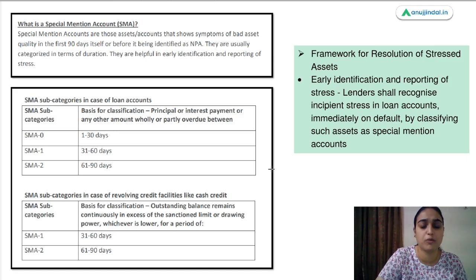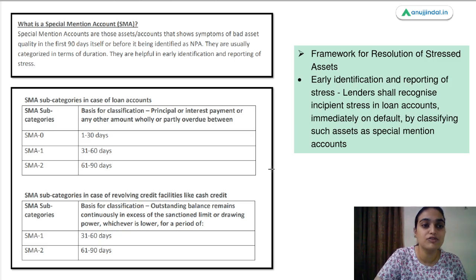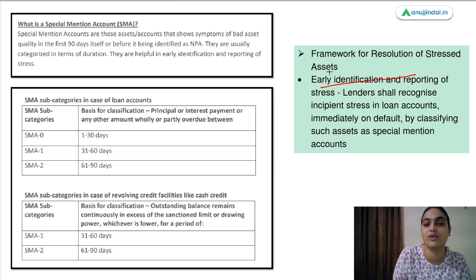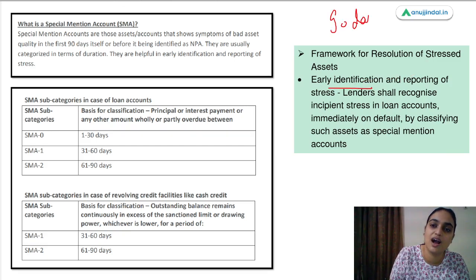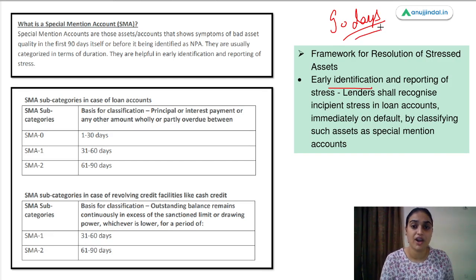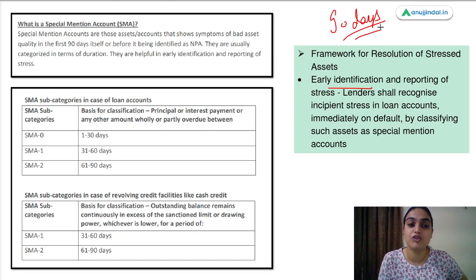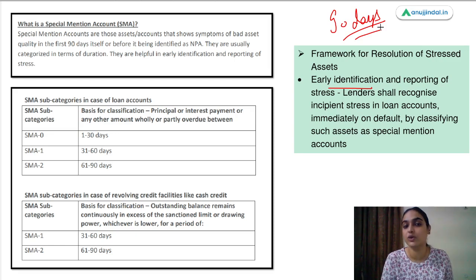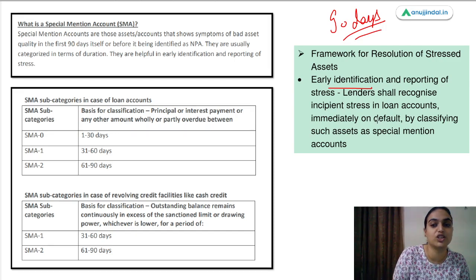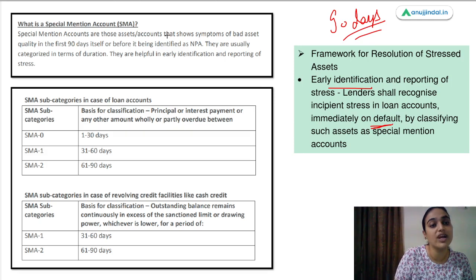Moving ahead to the resolution plan — what can be done to resolve stressed assets? First and foremost, you need early identification and reporting of stress. You don't wait 90 days after seeing an NPA to begin resolution. You account for this under Special Mention Accounts (SMA). You need to track which loans are approaching NPA status and take steps for resolution beforehand. There are chances some loans will soon be in default or become NPA — account for them early. When loans show symptoms of being bad assets in the first 90 days, they are tracked in special mention accounts.